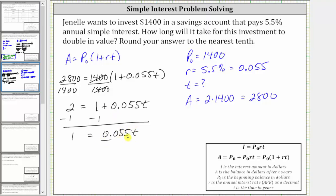And now to solve for T, we divide both sides by 0.055. Notice on the right side, 0.055 divided by itself simplifies to one. One times T is T. We have T is equal to one divided by 0.055.